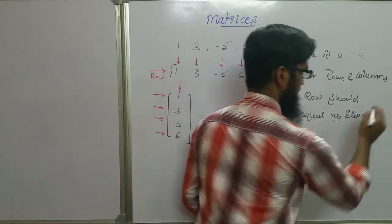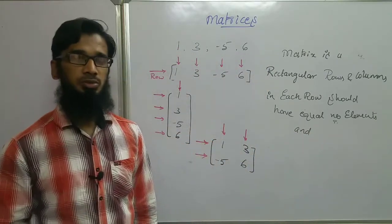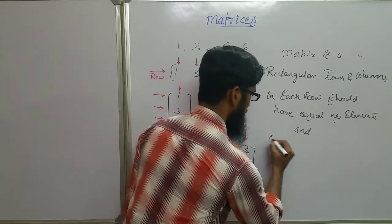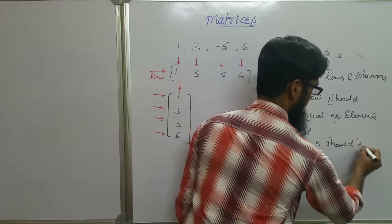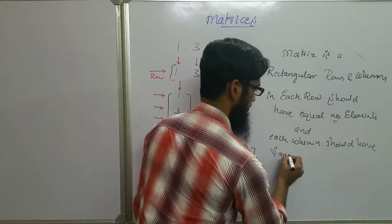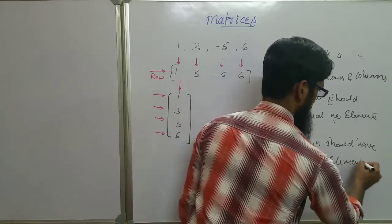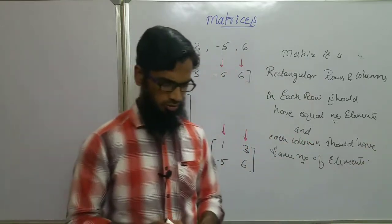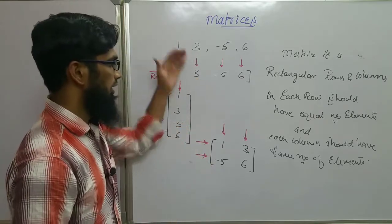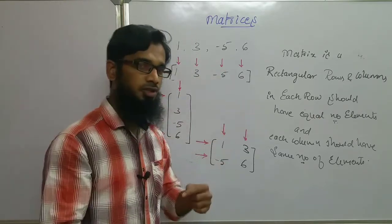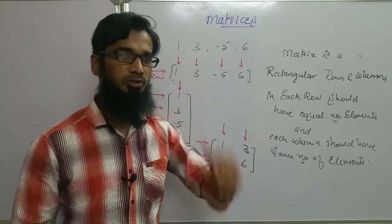The second condition is that each column should also have the same number of elements. So the main definition: a matrix is a rectangular arrangement of rows and columns in which each row will have the same number of elements and each column will also have the same number of elements.